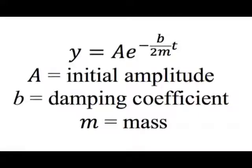This is the exponential decay, and b is the damping coefficient. m is, of course, the mass, and a is the initial amplitude. This equation can be used to fit the decreasing peaks in the acceleration.